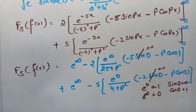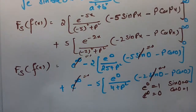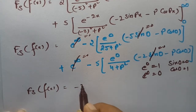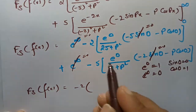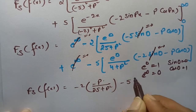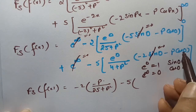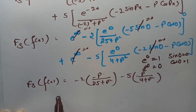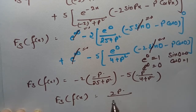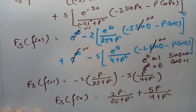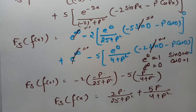The upper limit term vanishes since e power infinity is 0. What remains from the lower limit: the Fourier sine transform of f of x equals minus 2 times of minus p divided by 25 plus p squared, minus 5 times of minus p divided by 4 plus p squared. Simplifying, this gives 2p divided by 25 plus p squared plus 5p divided by 4 plus p squared.